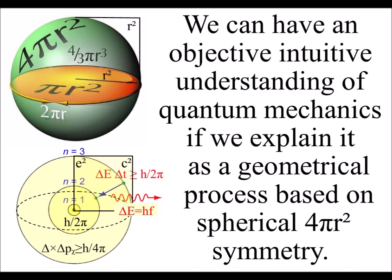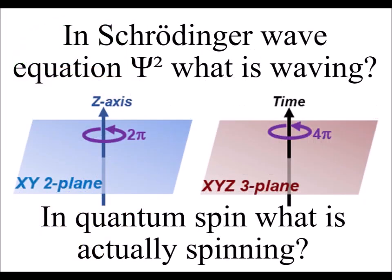In quantum mechanics, 2pi and 4pi represent the limit or boundary condition for a process of mathematical rotation or quantum spin. But what is spinning in quantum mechanics? It seems to be probability and uncertainty.